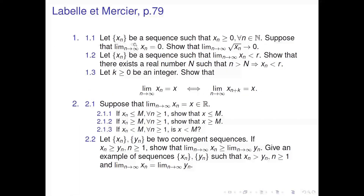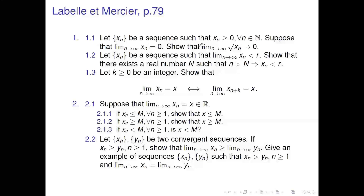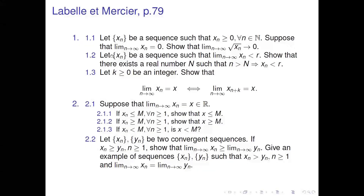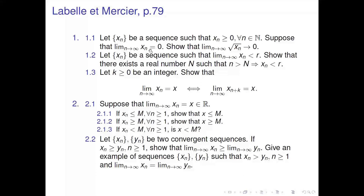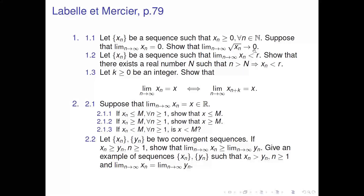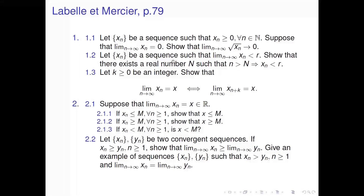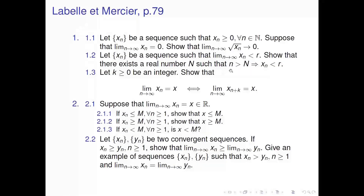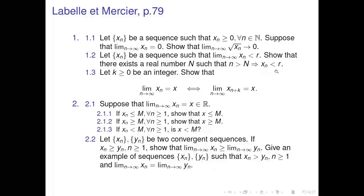Question 1. Let {x_n} be a sequence such that x_n is greater than or equal to 0 for any positive integer n. Suppose that the limit of x_n equals 0. Show that the limit of √x_n equals 0. Let {x_n} be a sequence such that the limit of x_n is less than r. Show that there exists a real number N such that if n is greater than N, then x_n is less than r.